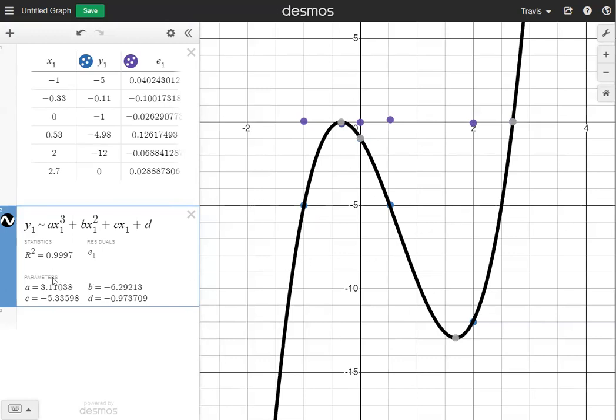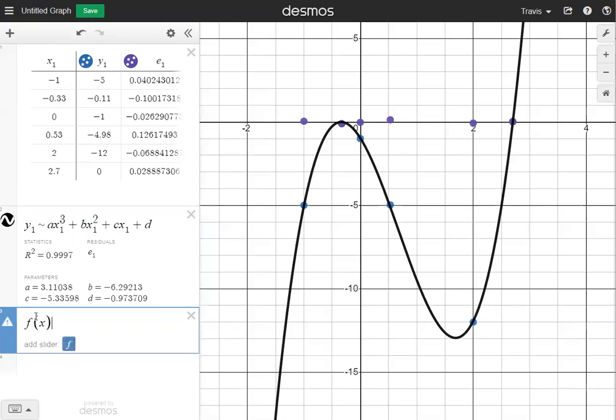Down here under parameters, you'll see what a, b, c, and d are. And what we're going to do now is create our regression function. So we're going to click into box three and I'm going to have my function notation f of x. And I'm just going to type in the equation exactly as I see it right here. All I'm going to do is replace a, b, c, and d with the actual numbers.